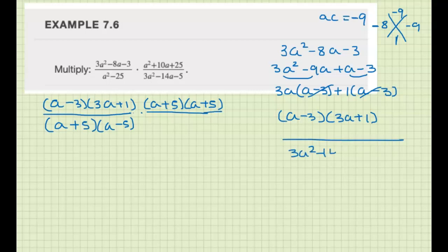Let's do the AC method with this one, too. So AC is negative 15. We need two numbers that multiply to give you negative 15 and add to give you negative 14, which are going to be negative 15 and 1. So we're going to split this one up, 3a squared minus 15a plus a minus 5.